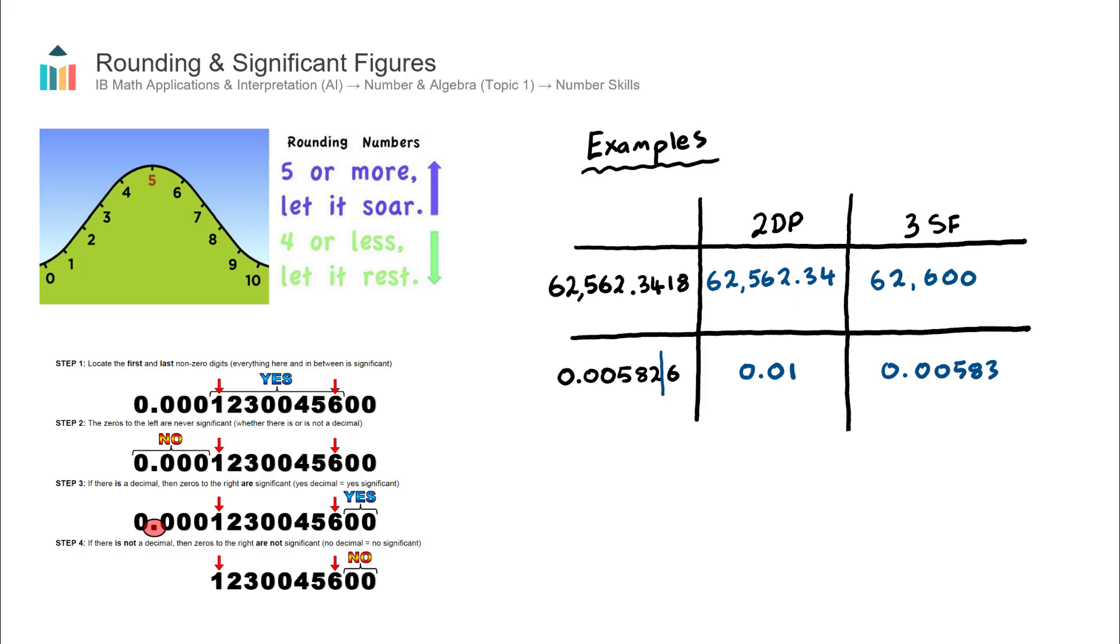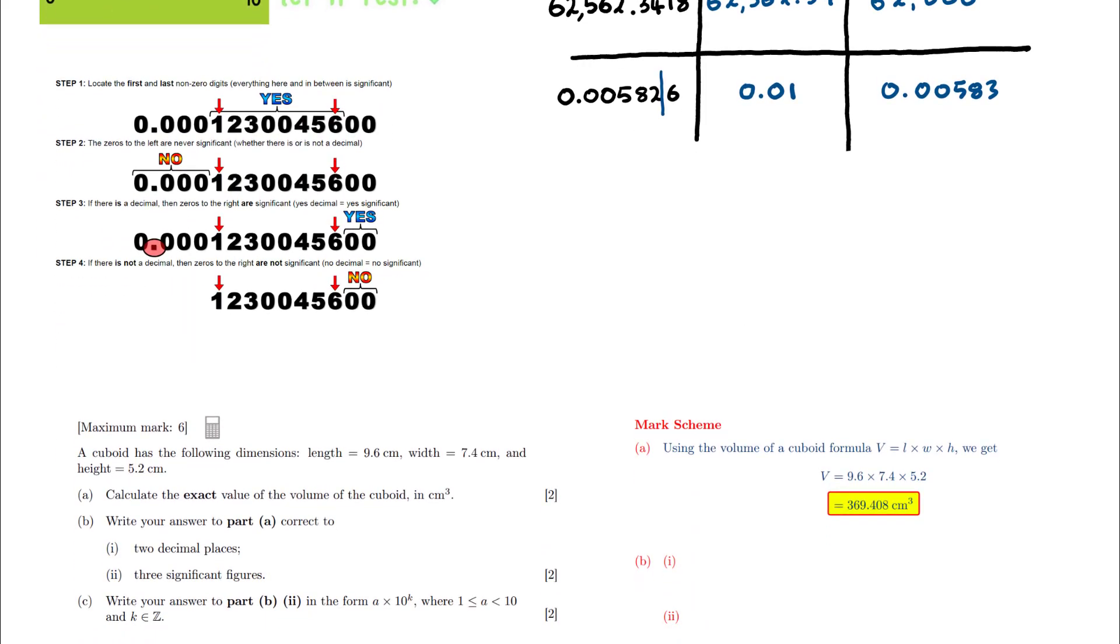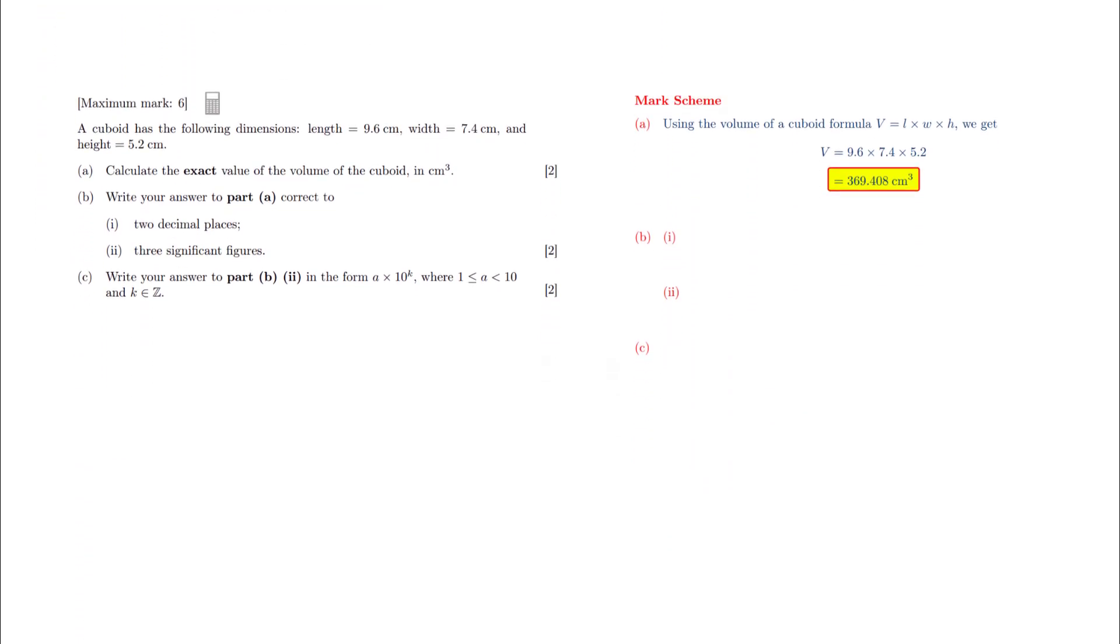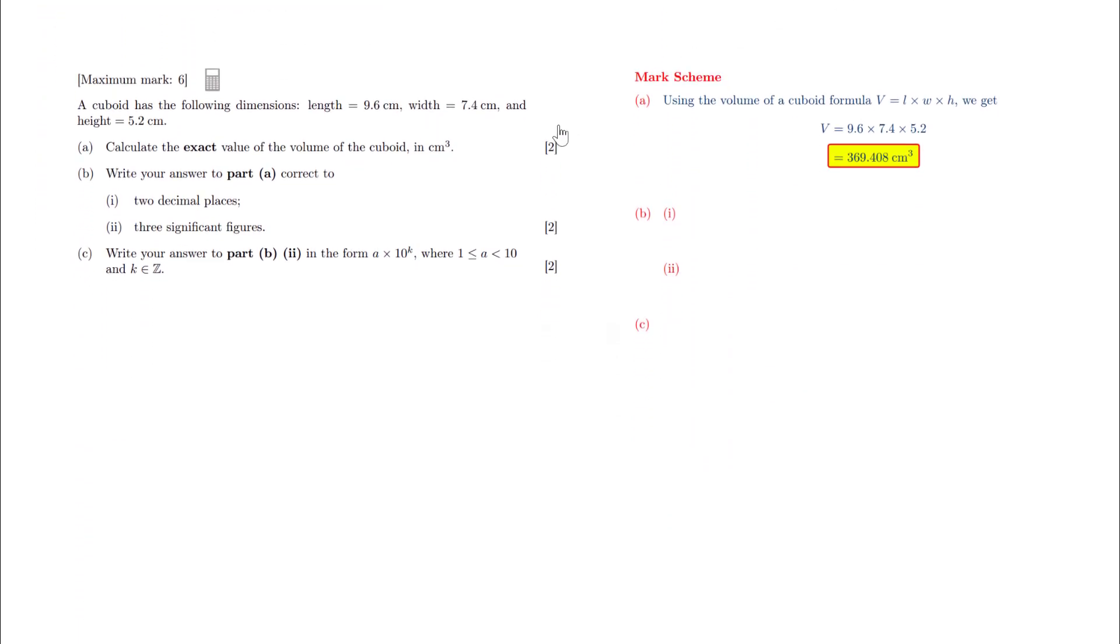That completes the examples. Let's now try an IB exam question to test our knowledge on this skill. We have a question here involving the volume of a cuboid. We have answered part A. Part B asks to write our answer to part A to both two decimal places and three significant figures, and you can see it's worth two marks.